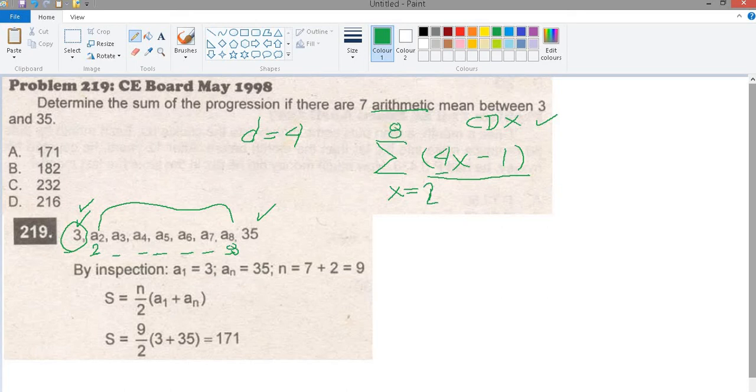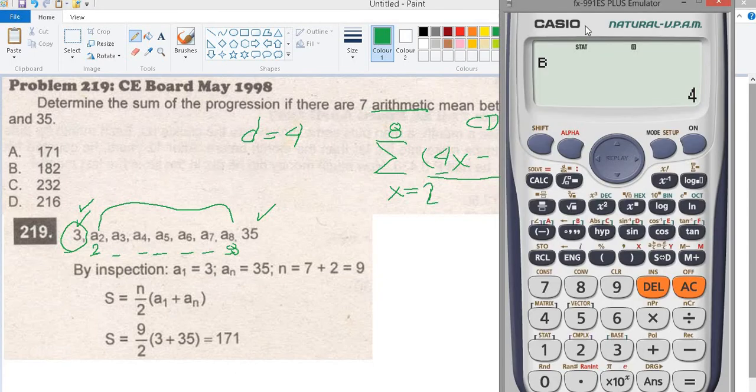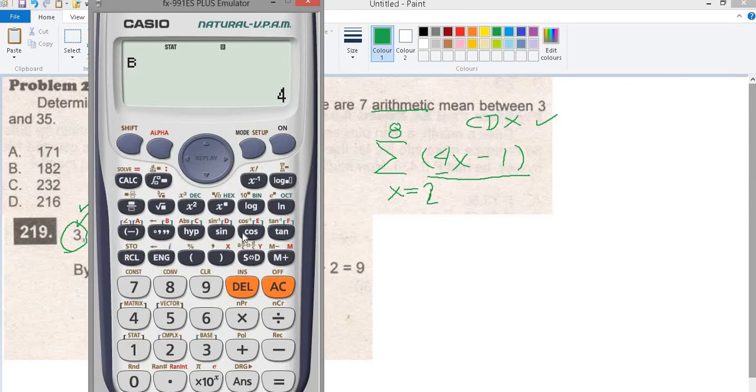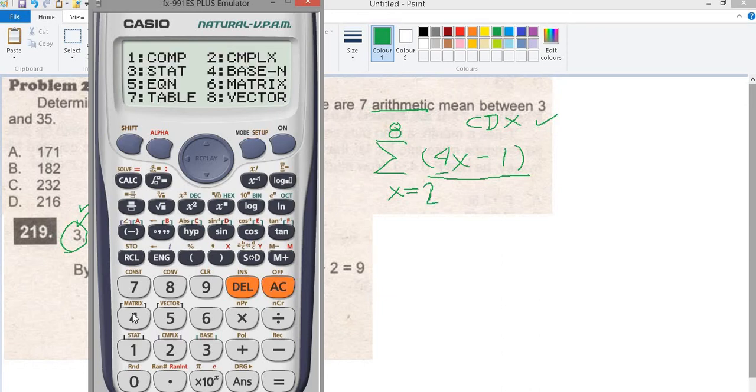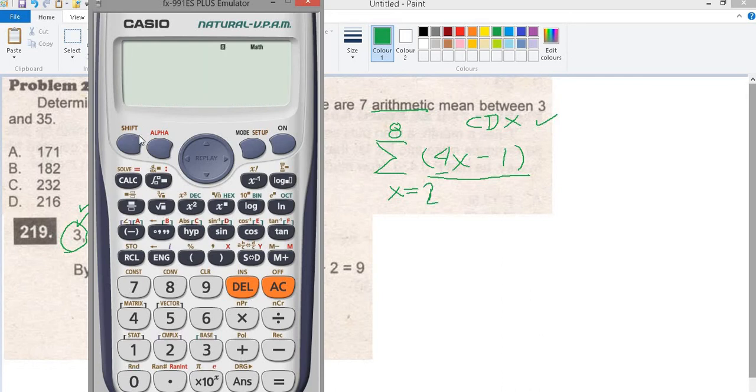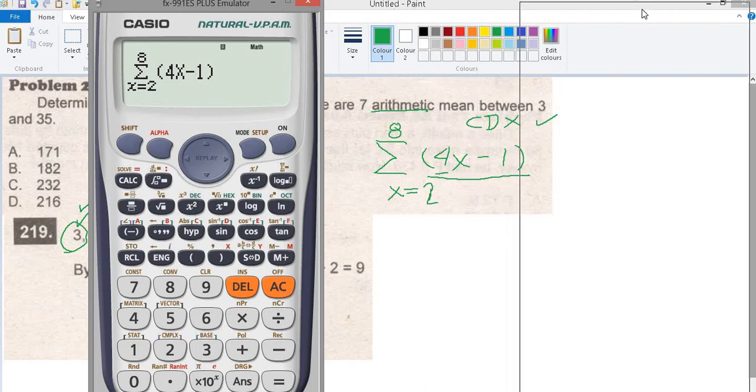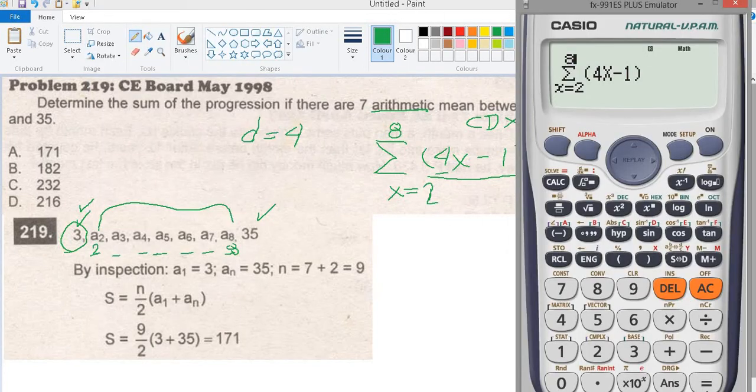Now we will use the calculator. This is shortcut. Summation mode, mode 1 complete, summation. 4x minus 1. The limit, starting limit is 2 and it will end at 8. Equals.